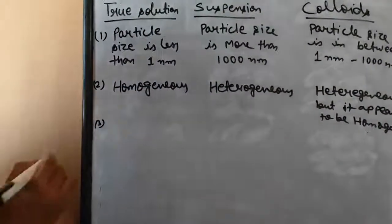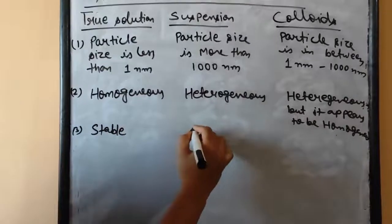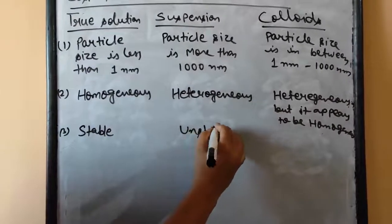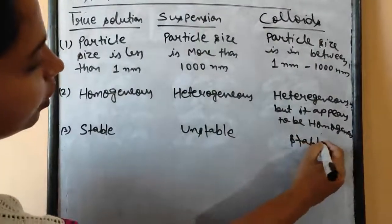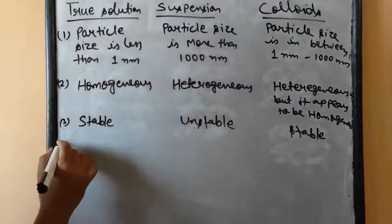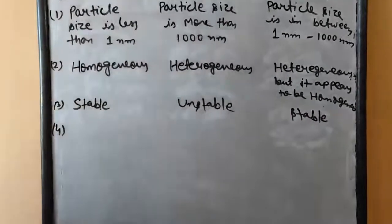Next point is: true solutions are stable, suspensions are unstable, and colloids are stable. All of these points are given in the previous lecture, so I am not describing it. We are just doing the comparative study about these three types of solution.